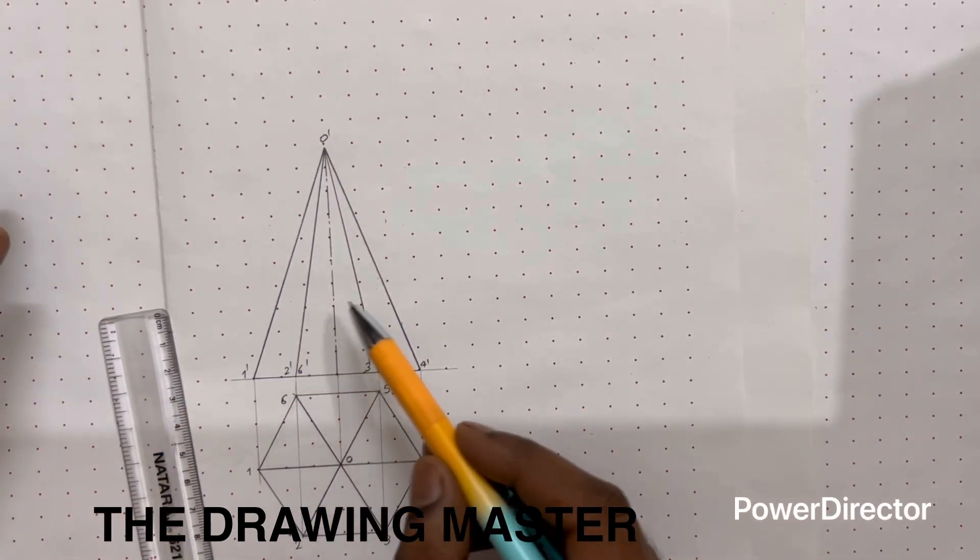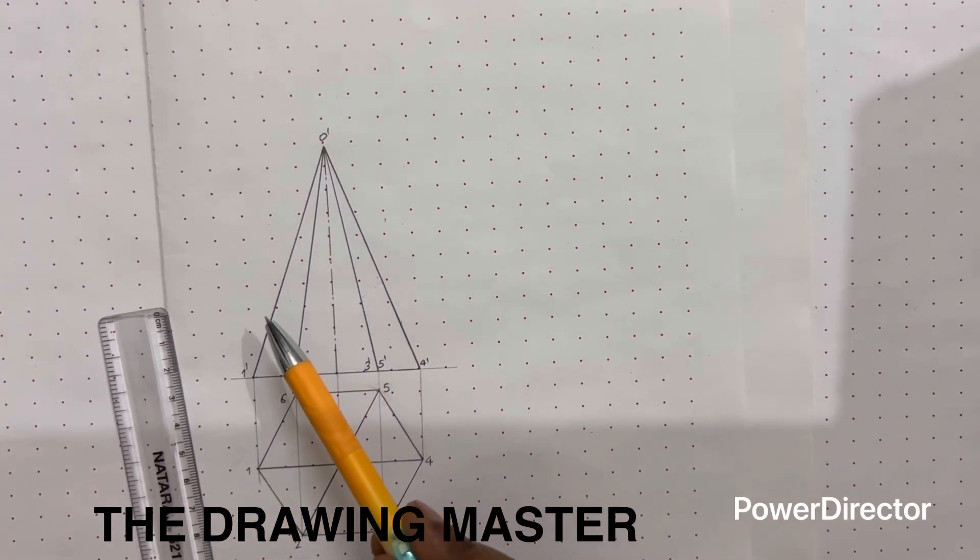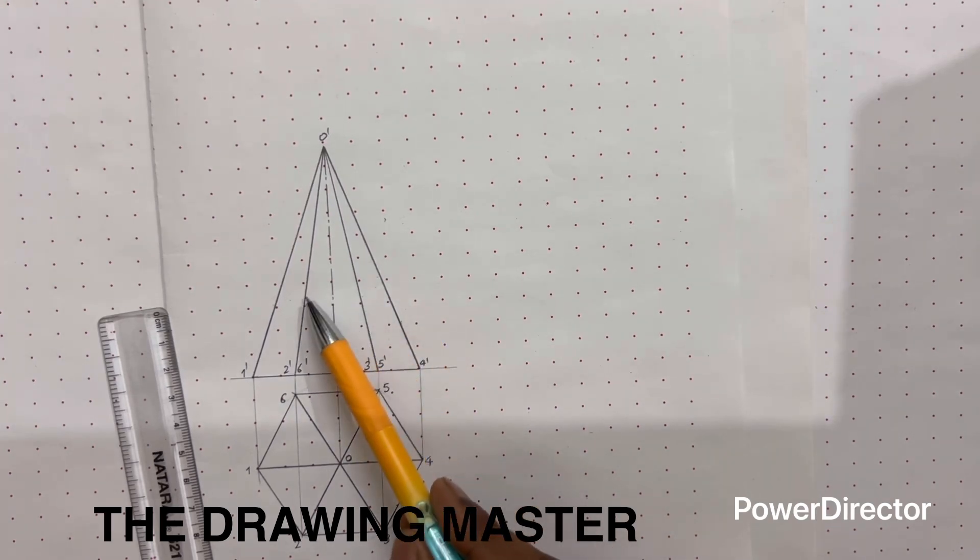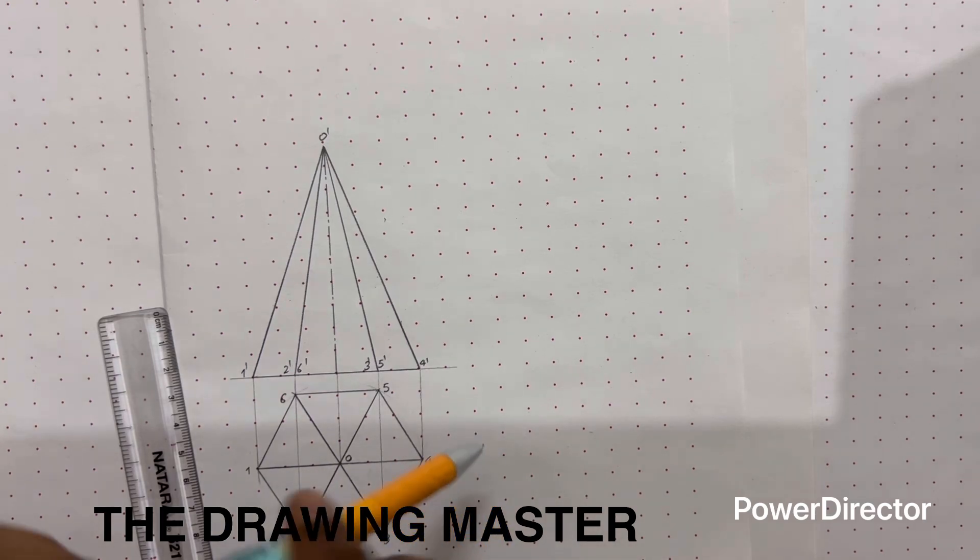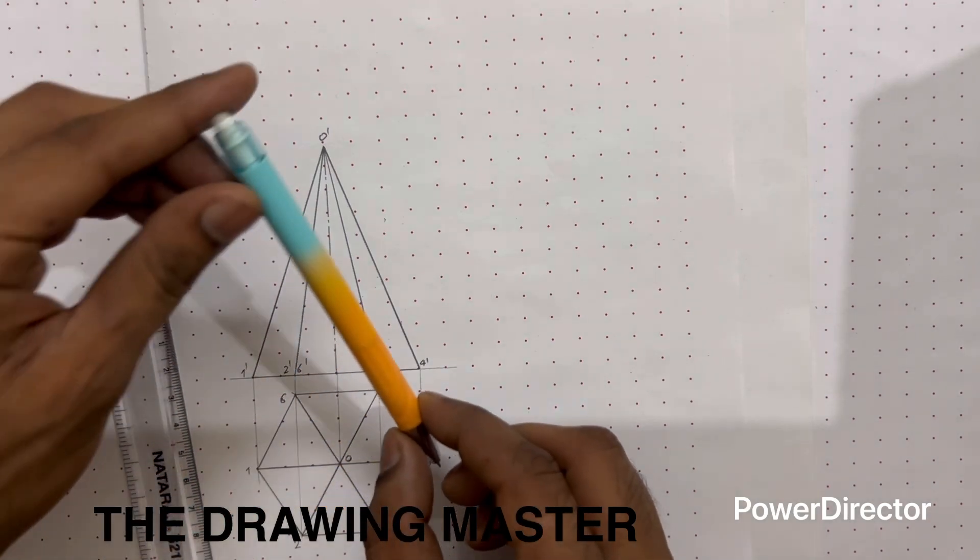Which one is the true slant height? Yes, this one and this one - these both are the true slant height. This is also slant height, but these two are apparent slant height because these two edges are not parallel to VP. O1 and O4 - these are the only two slant edges which are parallel to VP. This will give you true slant height in the front view.